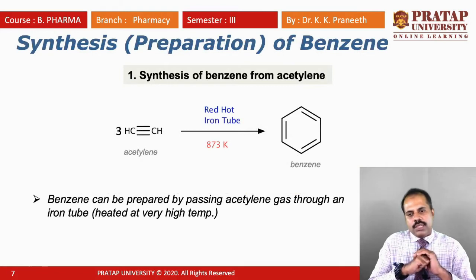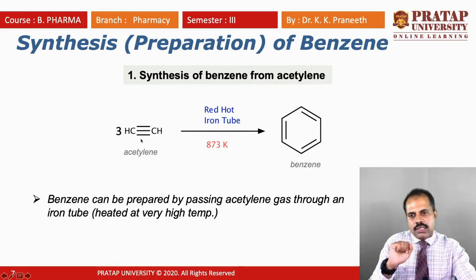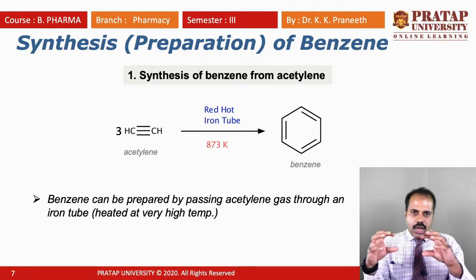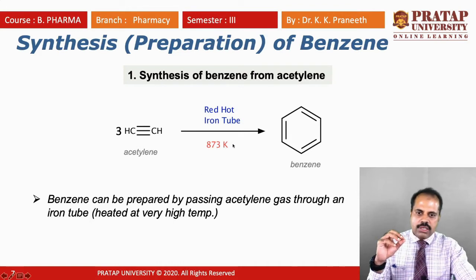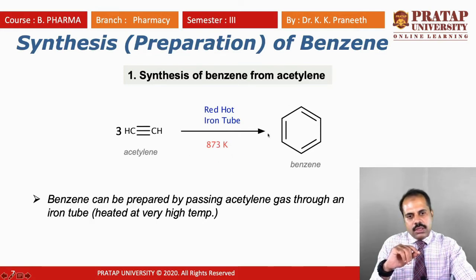Now let's see the synthesis of benzene — how benzene is prepared. There are four or five different methods. The first method is synthesis from acetylene. Acetylene is CH≡CH, which has a triple bond. When you pass acetylene through a red-hot tube heated at 873 Kelvin — which is around 600 degrees Celsius — you will get benzene. Thus benzene can be prepared by passing acetylene gas through a red-hot tube.